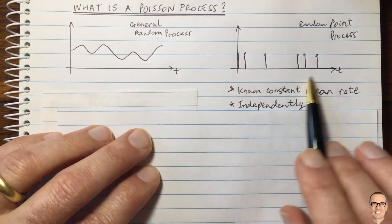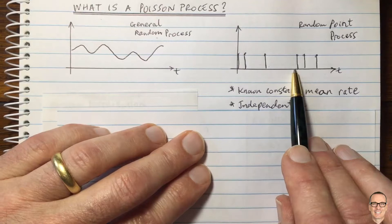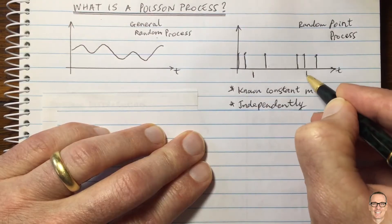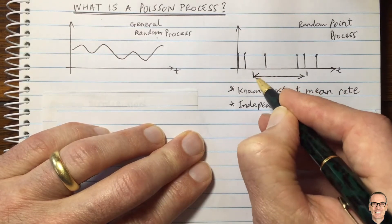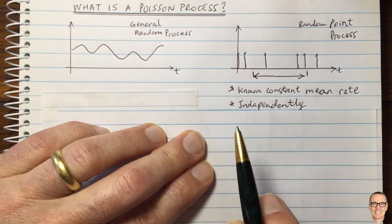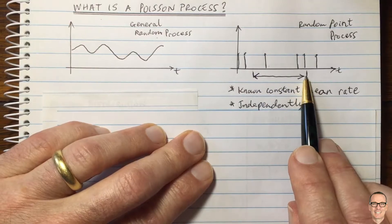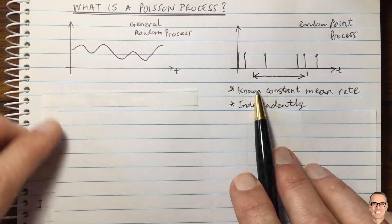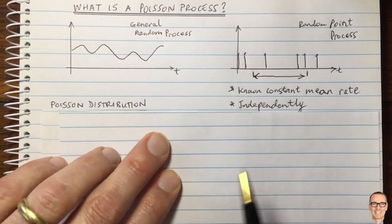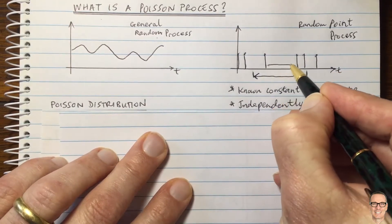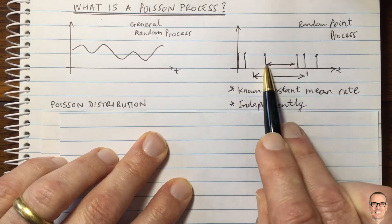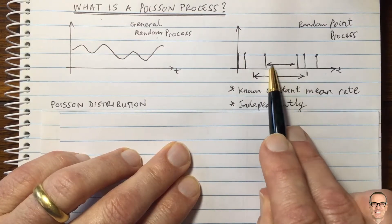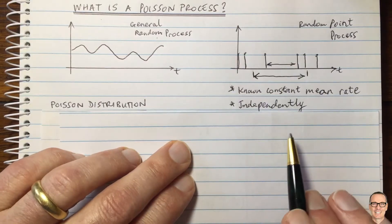So what do we want to know about this and how do we characterize this kind of process? There are two ways we can look at it. One is to look at a period of time and ask how many events happen in that period, or what is the probability of a certain number of events happening in that period — for this we use the Poisson distribution. You might also want to look at the time between events, and the probability of that time between events — this is the exponential distribution.